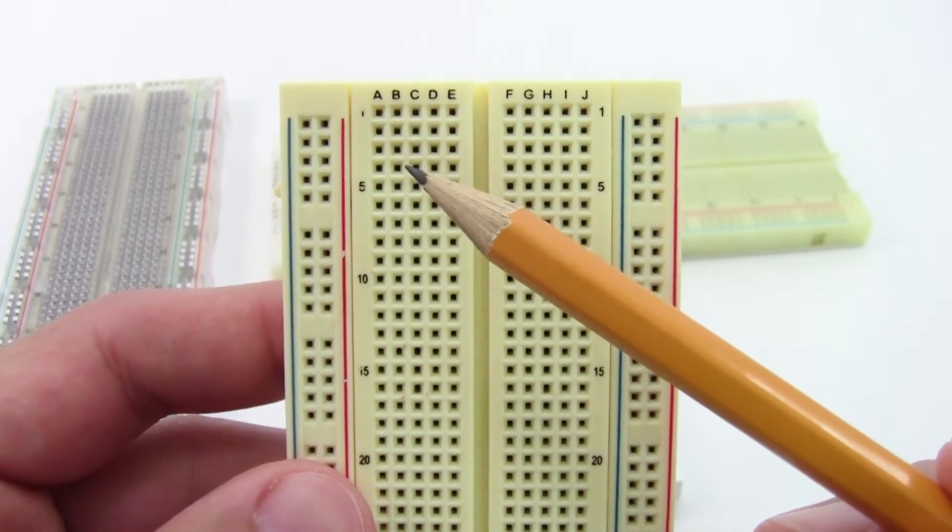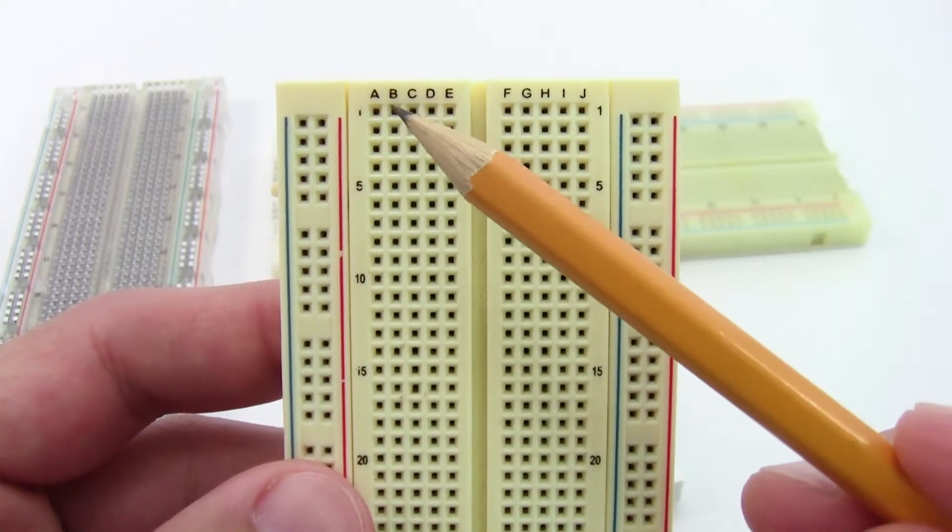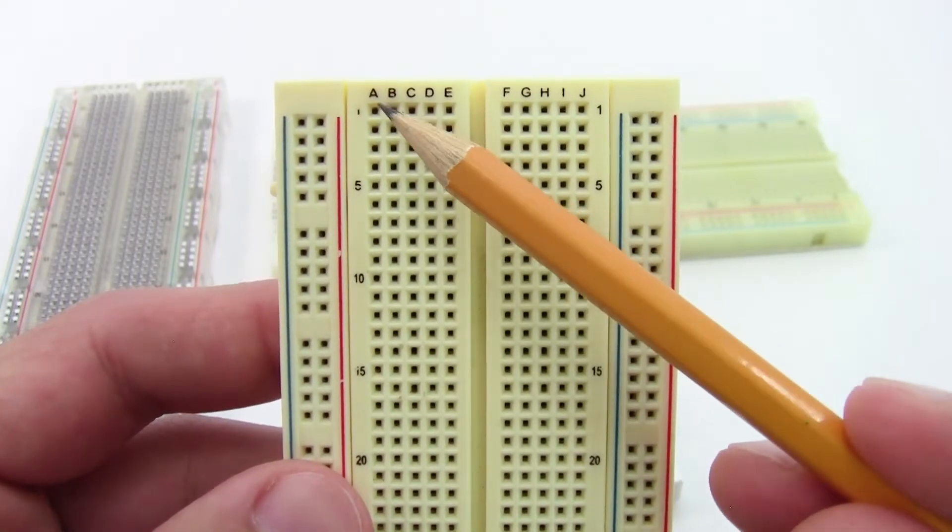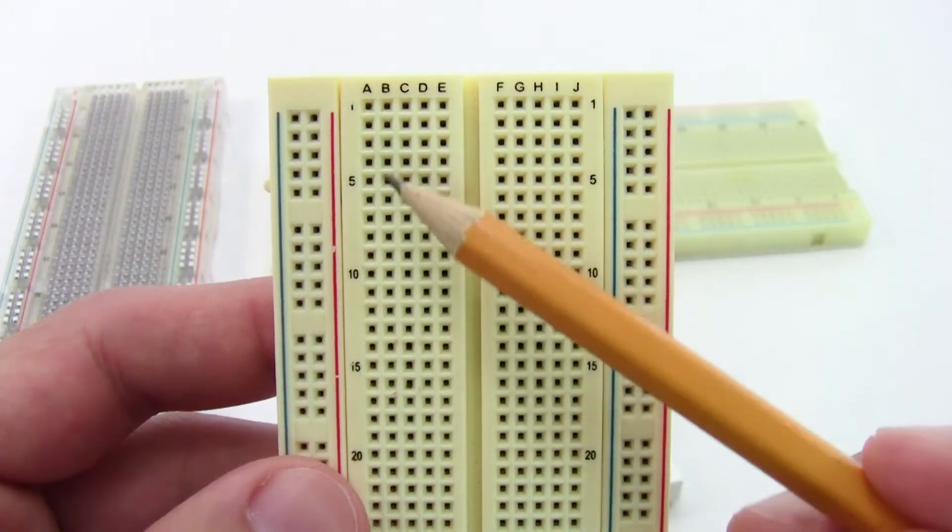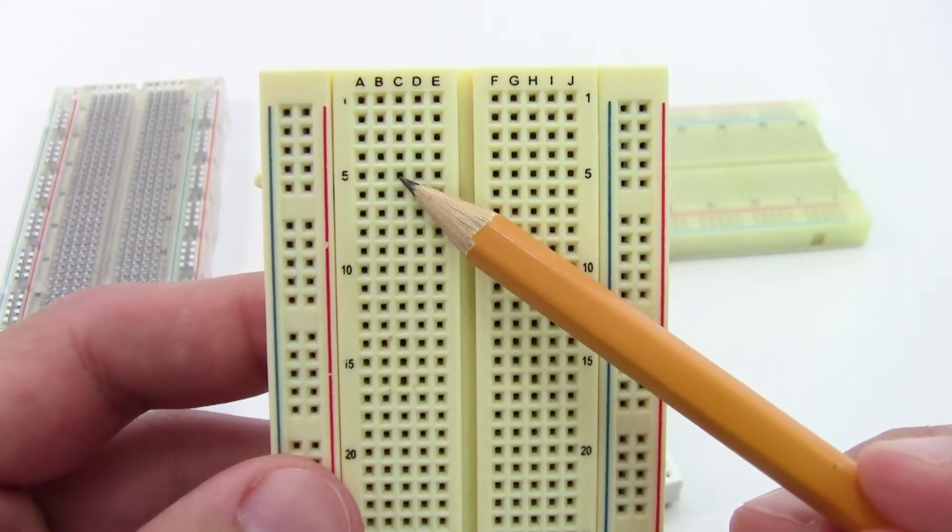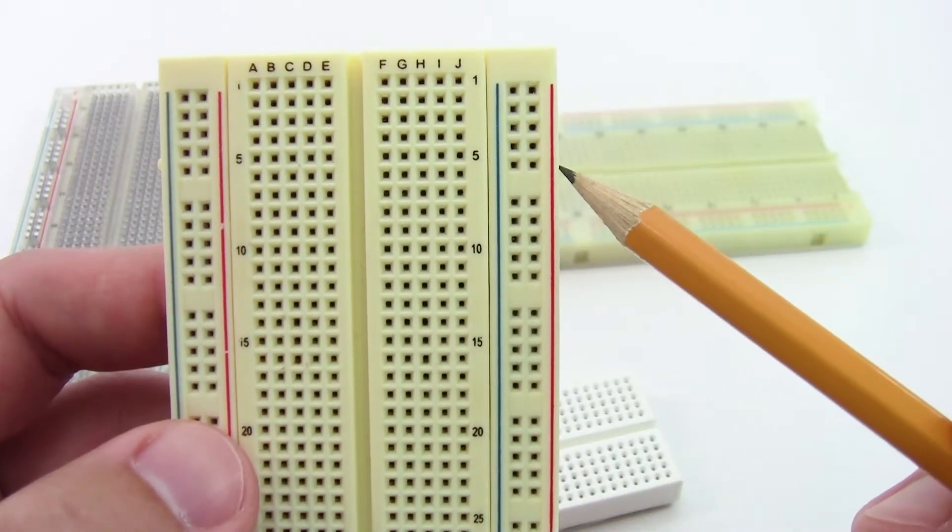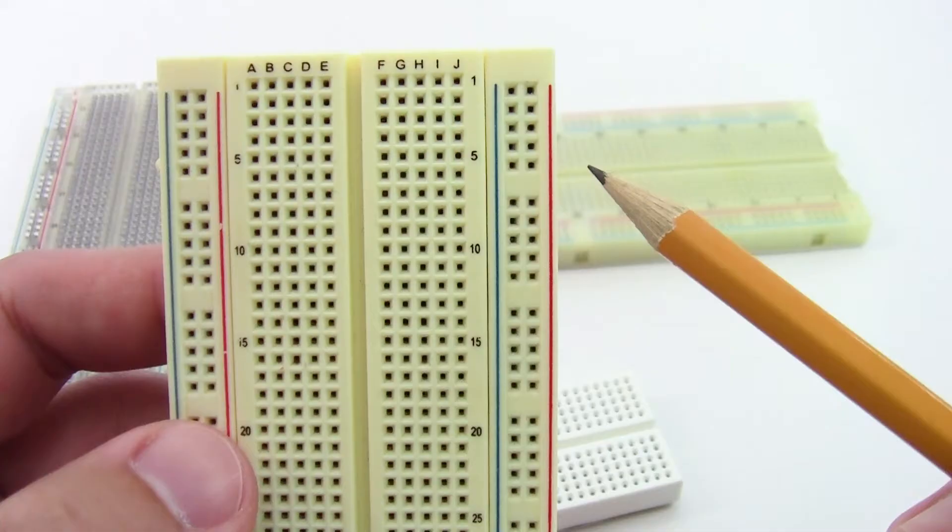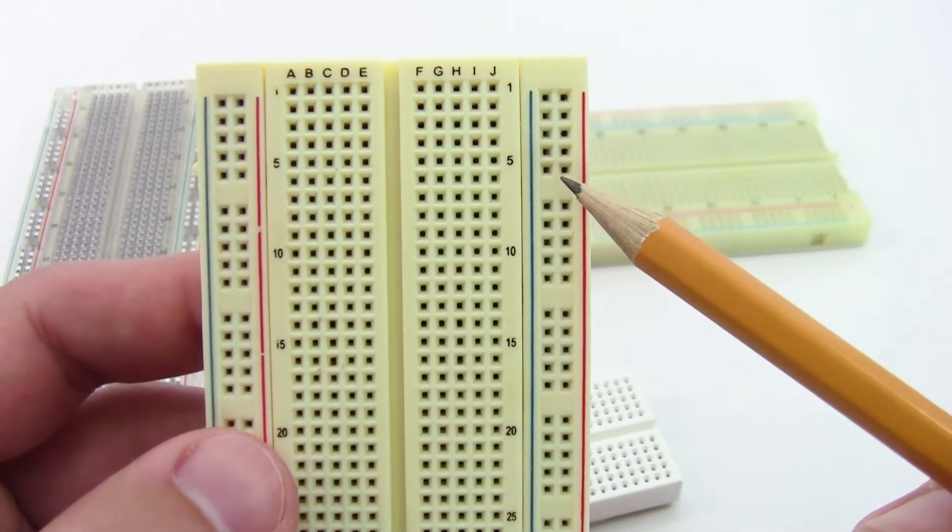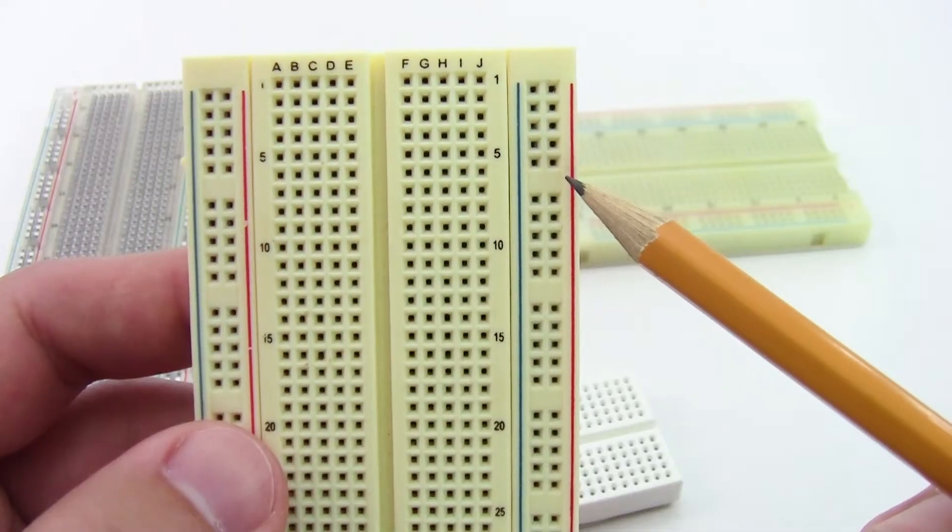Most breadboards come with labels and use a grid system to identify the holes. For example, this breadboard is labeled in portrait orientation with letters for the columns and numbers for the rows. For example, this would be hole C5. The power buses are also commonly marked with colored lines, red and blue or red and black, for power and ground. However, note that these are just labels. They do not affect the internal functionality of the breadboard.